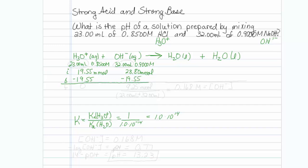And I really don't care how much water I make, because that's not going to affect the pH. So in my final row, that is 0, and 28.8 minus 19.55 gives me 9.25 millimoles.